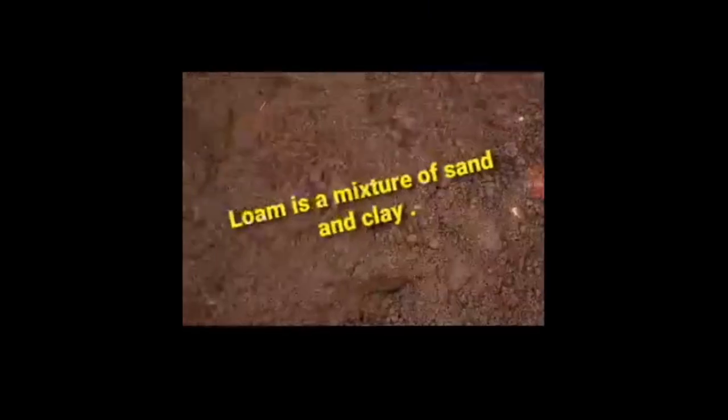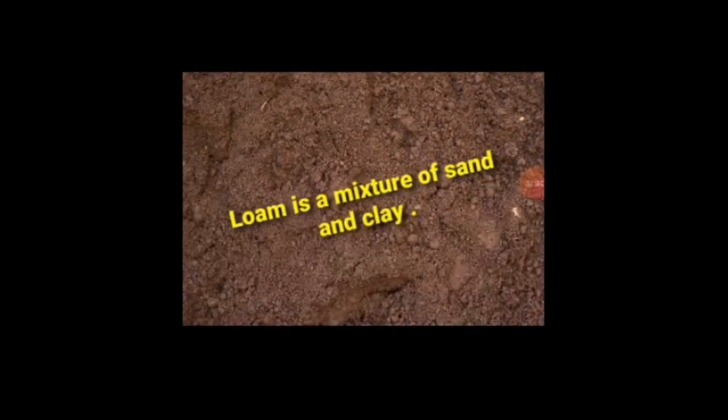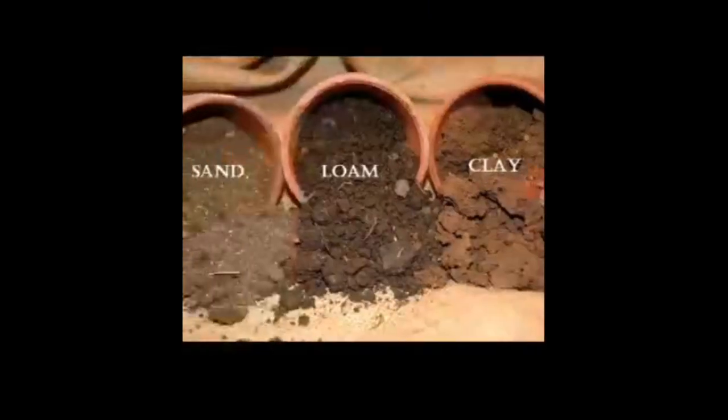Now we are going to study about loam. Loam is a mixture of sand and clay, and it is the best kind of soil for plants, especially crops. It contains a lot of humus. You can see the difference between the three types of soil: sand, loam, and clay. Earthworms help to turn the soil over to allow air to enter.